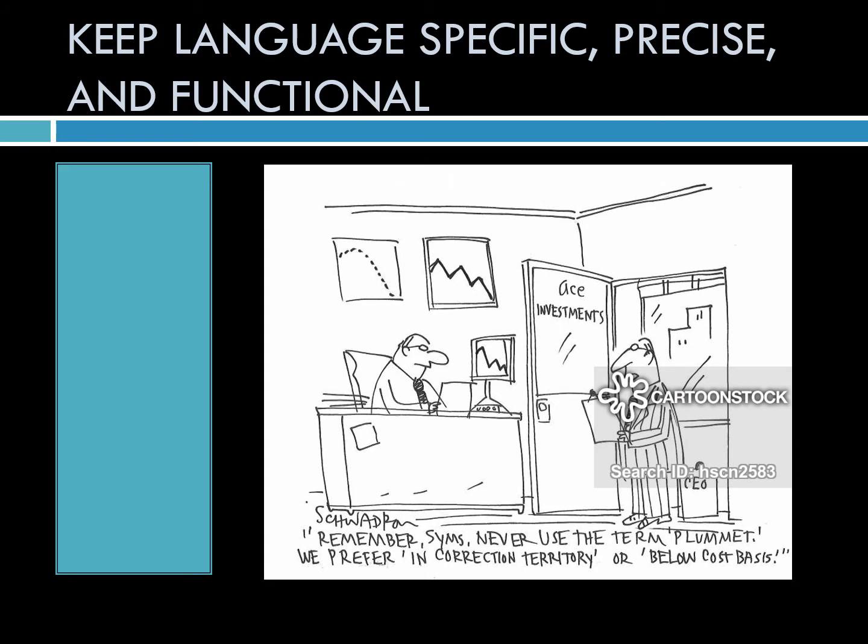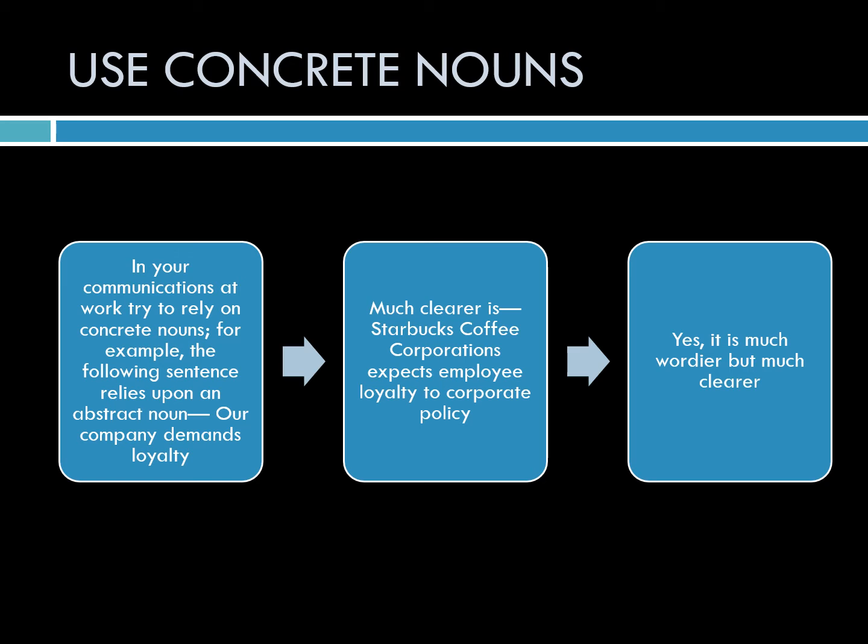Keep language specific, precise, and functional. To do this, use concrete nouns. A concrete noun is something tangible — for example, 'table.' An abstract noun is something like 'love,' 'integrity,' or 'loyalty.' When possible, clarify or replace abstract nouns with concrete ones. For example, 'our company demands loyalty' is vague, whereas 'Starbucks Coffee Corporation expects employee loyalty to corporate policy' is wordier but actually much clearer.